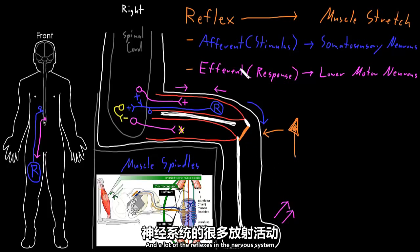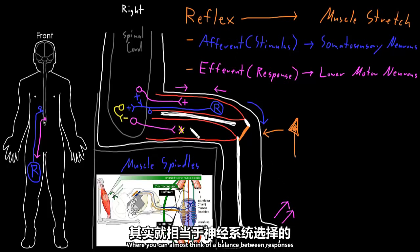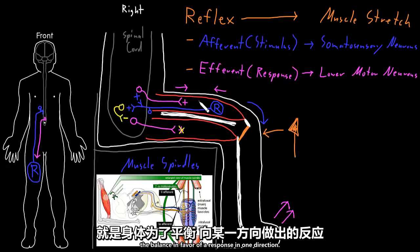A lot of reflexes in the nervous system have similarities to this setup, where you can think of a balance between responses that the nervous system can choose from, and the reflex tips the balance in favor of a response in one direction.